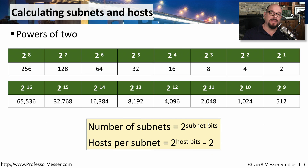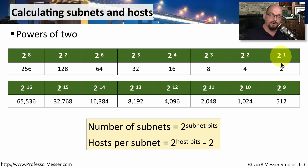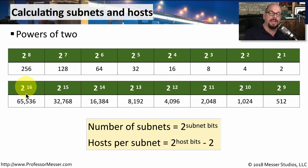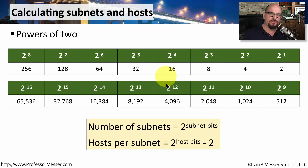Since we know how many bits are part of the network side and how many are part of the host side of the IP address, we can quickly calculate the total number of subnets available and the total number of hosts available by using powers of two. We wrote a chart like this in an earlier video where we took 2 to the first power, 2 to the second power, 2 to the third power, all the way through 2 to the eighth power — and you could continue this through 2 to the sixteenth and even further. You start with 2, double to 4, double to 8, double to 16, and so on, creating an easy reference chart to use when performing subnetting tasks.